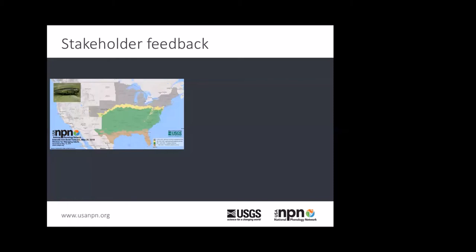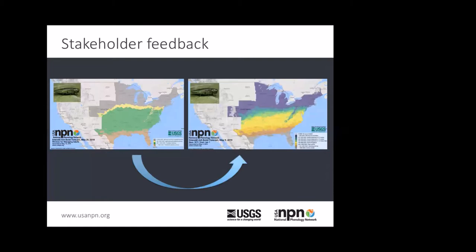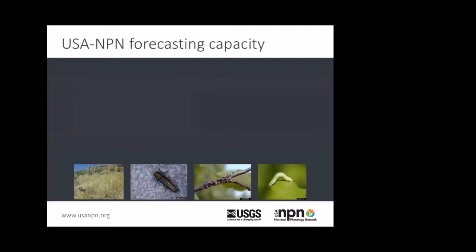We've really incorporated a lot of stakeholder feedback to improve our models. This is what our maps looked like in 2018, and this is what they look like now, for the emerald ash borer dashboard. As you can see, we've increased the number of categories based on feedback we've received to show more of the progression of the stages and the emergence of emerald ash borer. We've also switched our categories — going from categorizing treatment windows to an approach where we just tell people what the life stages of the insects are, and let them make their own decisions about how and when to treat.